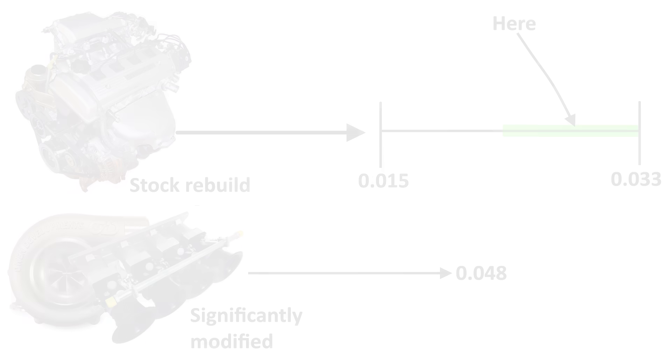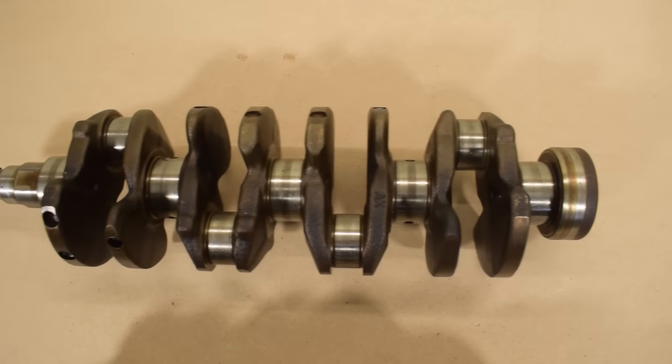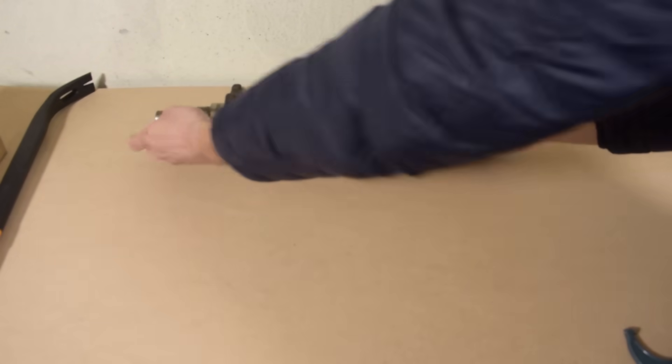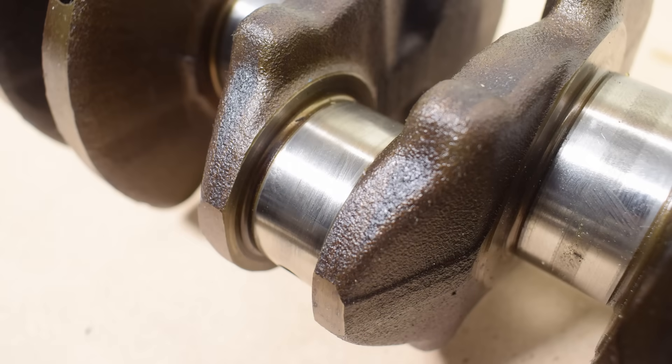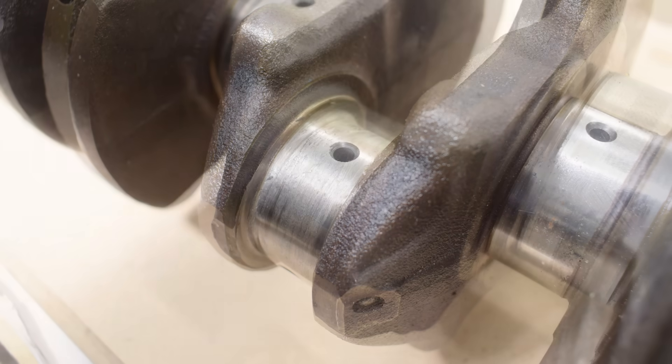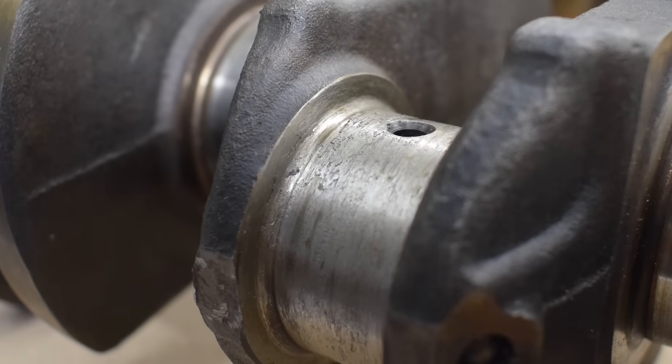Now, let's proceed to measure our bearing clearance. But before we do that, we will do a quick visual inspection of our crankshaft journals and bearing surfaces. Here we have two used Toyota 4A crankshafts, one of which is in good condition, and another one which is in horrible condition.